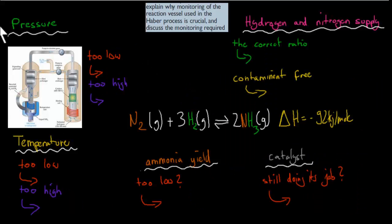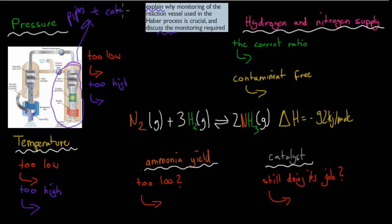The thought point says: explain why monitoring of the reaction vessel used in the Haber Process is crucial, and discuss the monitoring required. The reaction vessel is specifically the part where the catalyst is located — it contains the catalyst, the pipes, all the reactants going through it, and the product being produced from it. The key things to monitor are pressure, temperature, ammonia yield, hydrogen and nitrogen supply, and the catalyst.